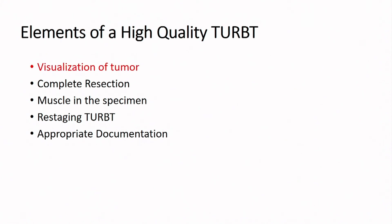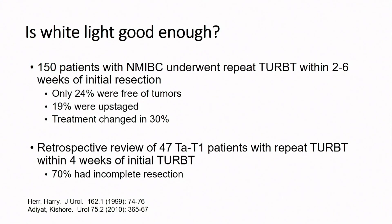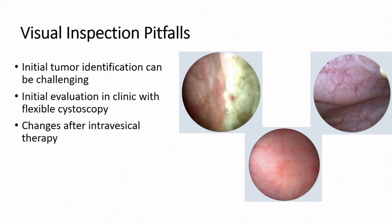We'll go back to the top — visualization — because that's really what we're going to talk about today. Is white light good enough? The answer is often not. Studies show that we miss tumor; if you simply go back and look six weeks later, you find significant tumor. Many times the tumor found can change the treatment. There are pitfalls: diagnosing CIS can be challenging. You do flexible cystoscopy in the office and rigid cystoscopy in the OR, and things can look different. Changes impacted on the bladder by intravesical therapy can also confound visualization.